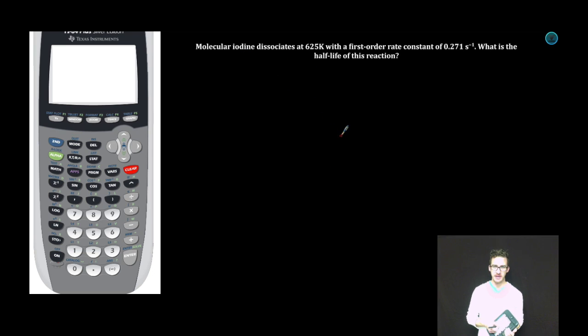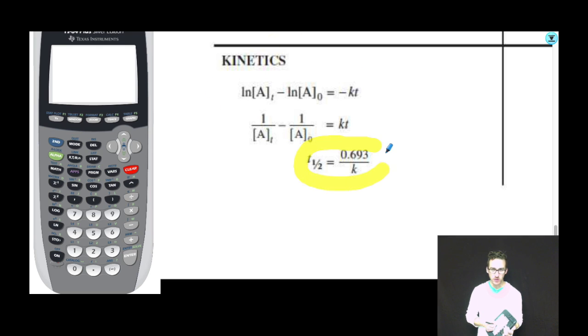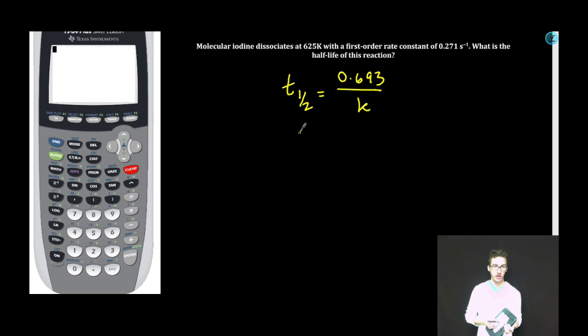Molecular iodine dissociates at 625 Kelvin with a first-order rate constant of 0.271 per second. What is the half-life of this reaction? Formula chart. Half-life equation. Boom! We wanna know the half-life? We know the rate constant.